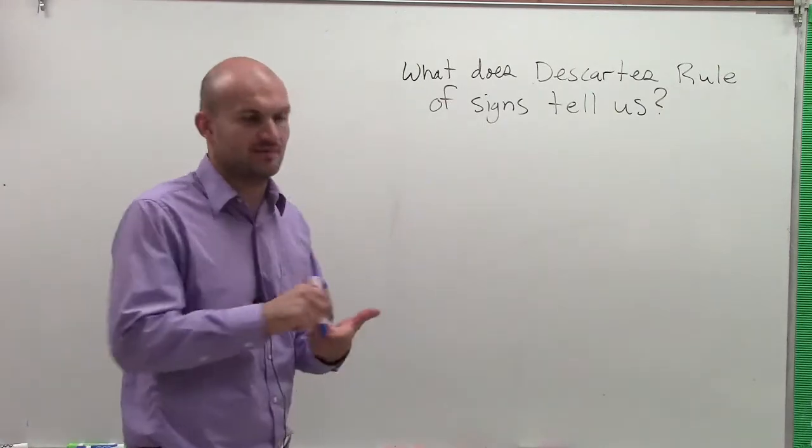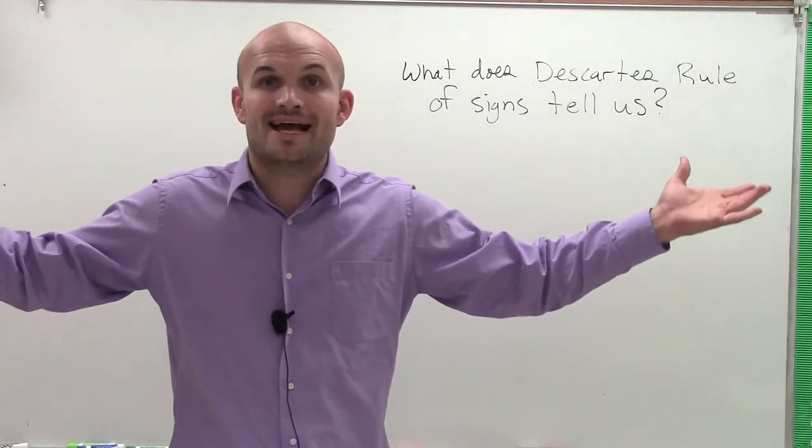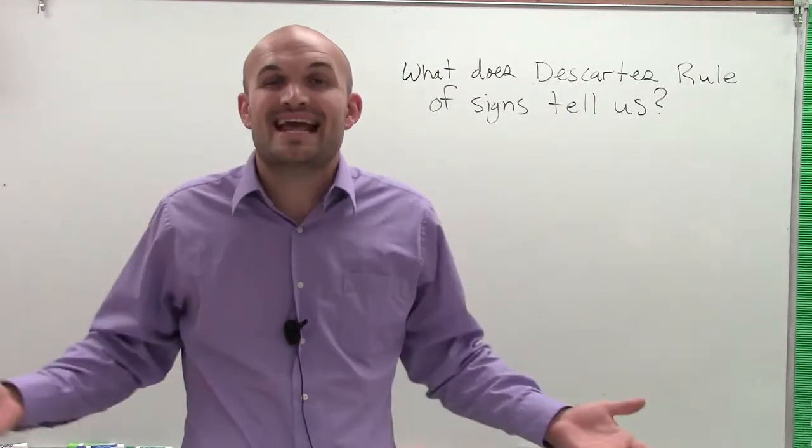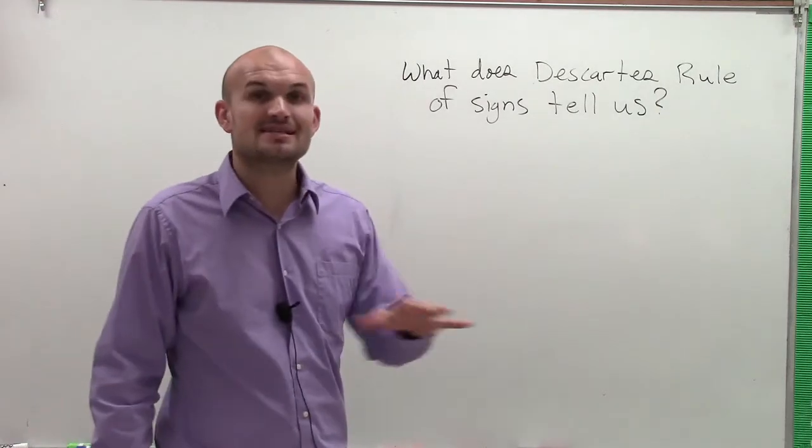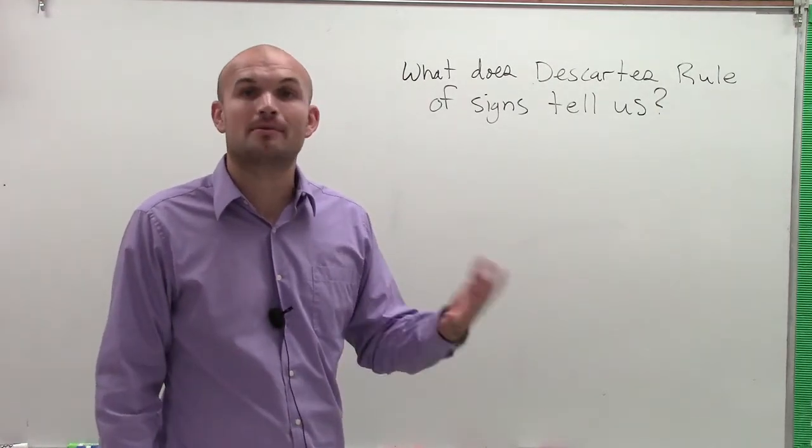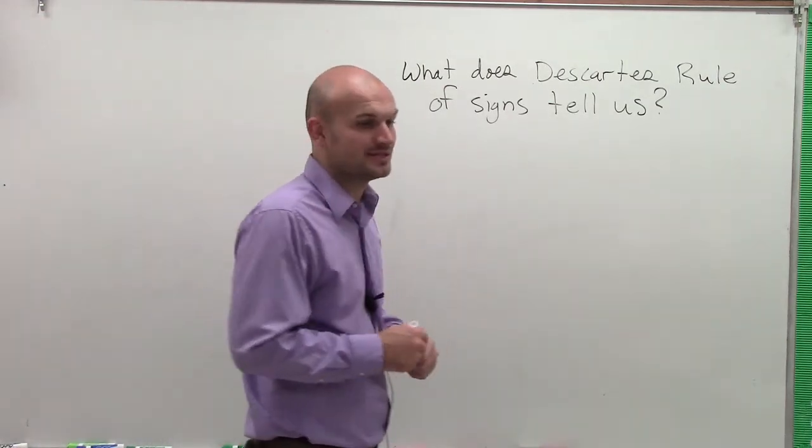So when you're calculating the zeros, right, we talked about the Rational Zero Test. Sometimes you could be writing out all the rational zeros and your polynomial doesn't even contain any rational zeros, right? Well, for here Descartes' Rule of Signs, what it does is it's going to tell us the number of positive and negative zeros that our polynomial is going to contain.